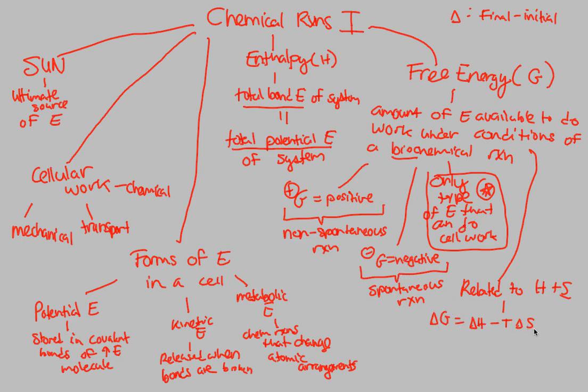This is going to tell us whether or not delta G is positive or negative, and if it's negative, it's spontaneous. If it's positive, it's not spontaneous. It's unfavorable. If it's positive, it's favorable if it's negative.